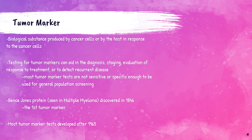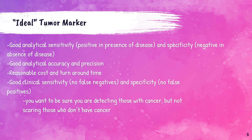The Bence-Jones protein, which is seen in the urine of patients with multiple myeloma, was the first tumor marker discovered. What makes a good tumor marker test? It needs to have good analytical sensitivity and specificity — it needs to be positive in the presence of cancer and negative in the absence of cancer, so we don't misdiagnose patients. It also needs to have good accuracy and precision with a reasonable cost and turnaround time.